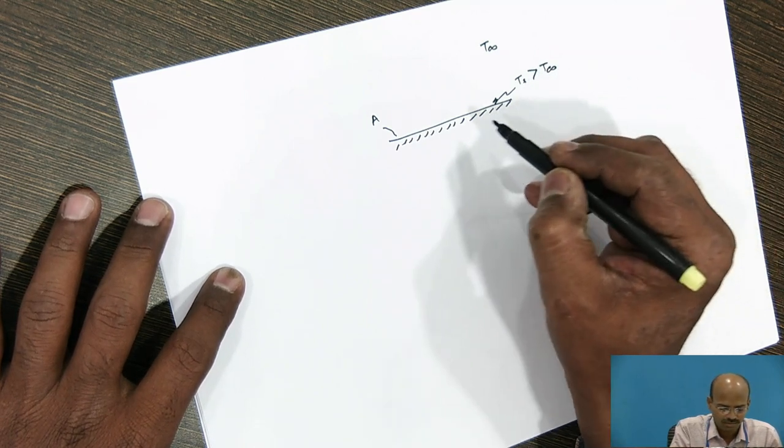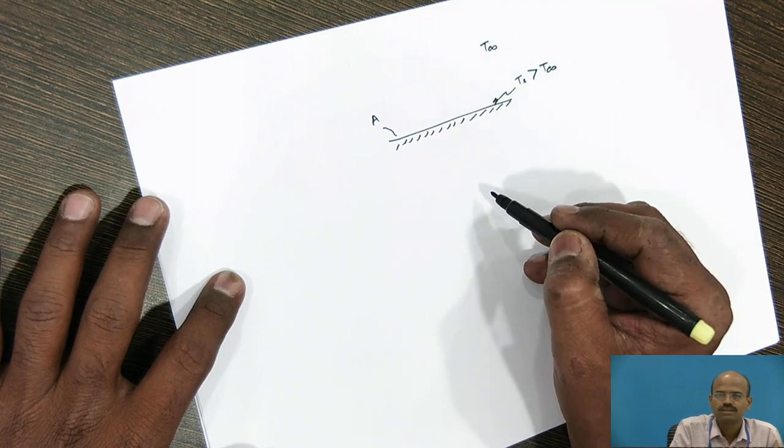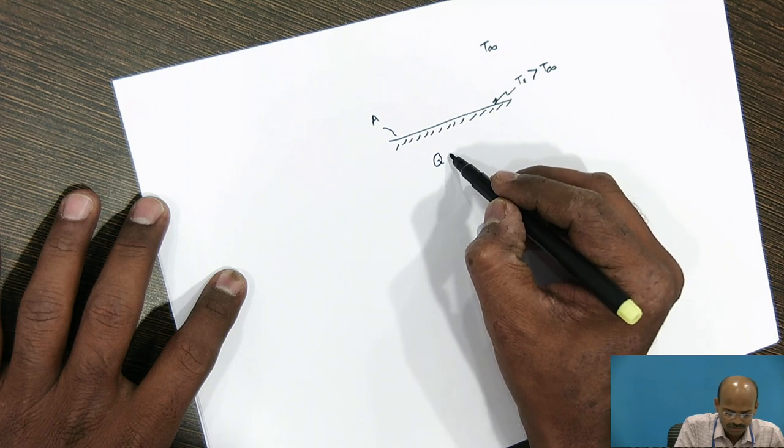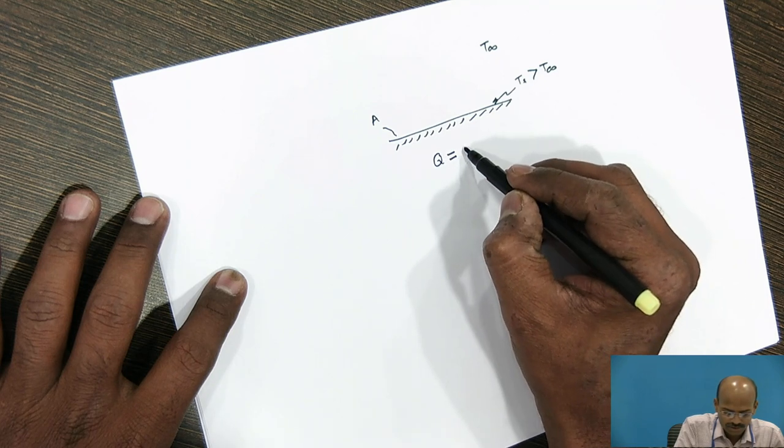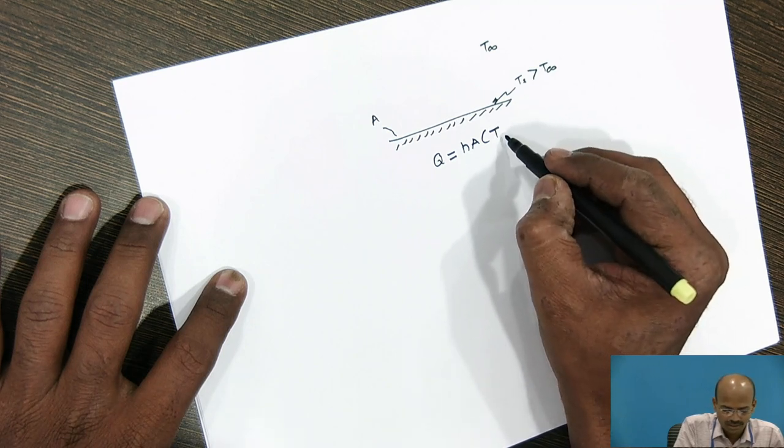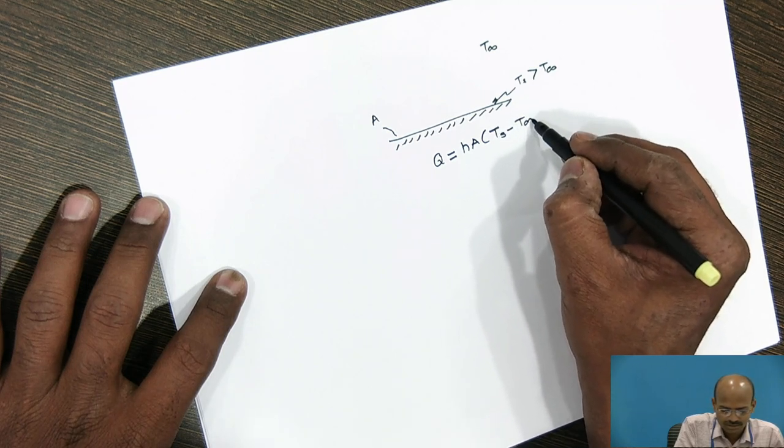Now, this mode of heat transfer is the convective mode, which will follow the equation Q is equal to HA delta T means Ts minus T infinity.